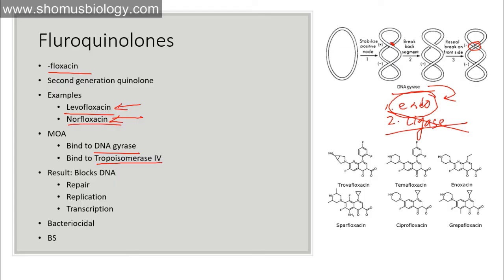Gyrase can only cleave the DNA but cannot religate it. During DNA replication, when the cell tries to remove supercoiling, it results in double-stranded DNA breaks. A large number of double-stranded DNA breaks cannot be repaired in time, leading to defects in the DNA and cell death. This results in blockage of DNA replication and transcription, and further cell death.